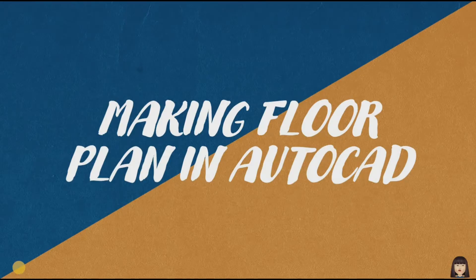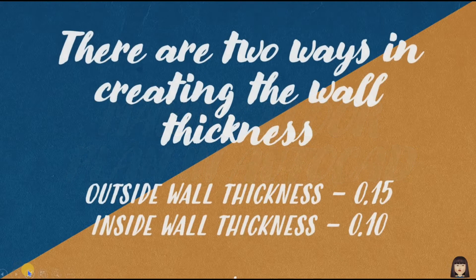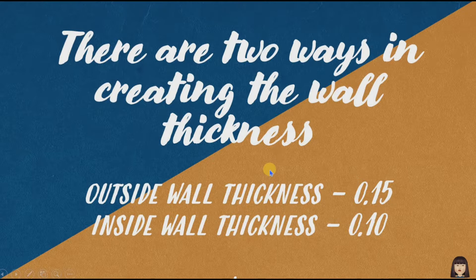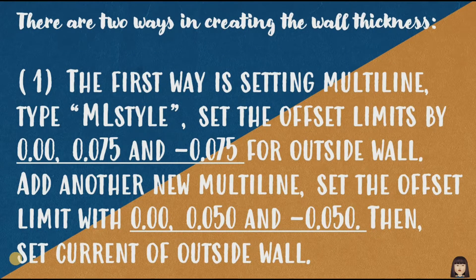Good day, drafters. For today's video I will show you how to make a floor plan using a CAD application. I have here two ways of creating the wall thickness. In creating a floor plan you need to first create the wall thickness — the outside wall thickness and the inside wall thickness. The architectural standard for outside wall thickness is 0.15 and the inside wall thickness is 0.10.